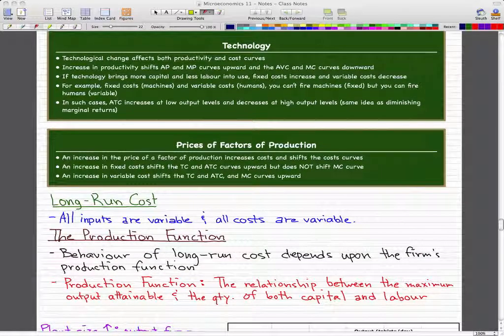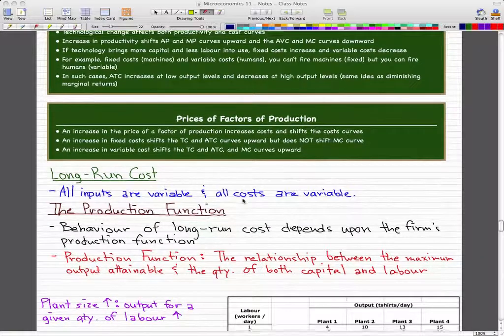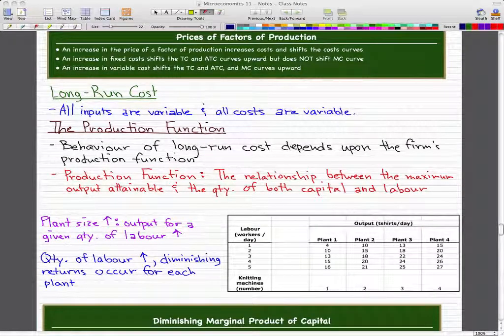That's all for short-run costs. Now we're on to long-run costs. In the long run, all inputs are variable and all costs are variable, because we're thinking about a time span of years. In years we can do anything - we can move buildings, sell a building and move all our workers to another building.